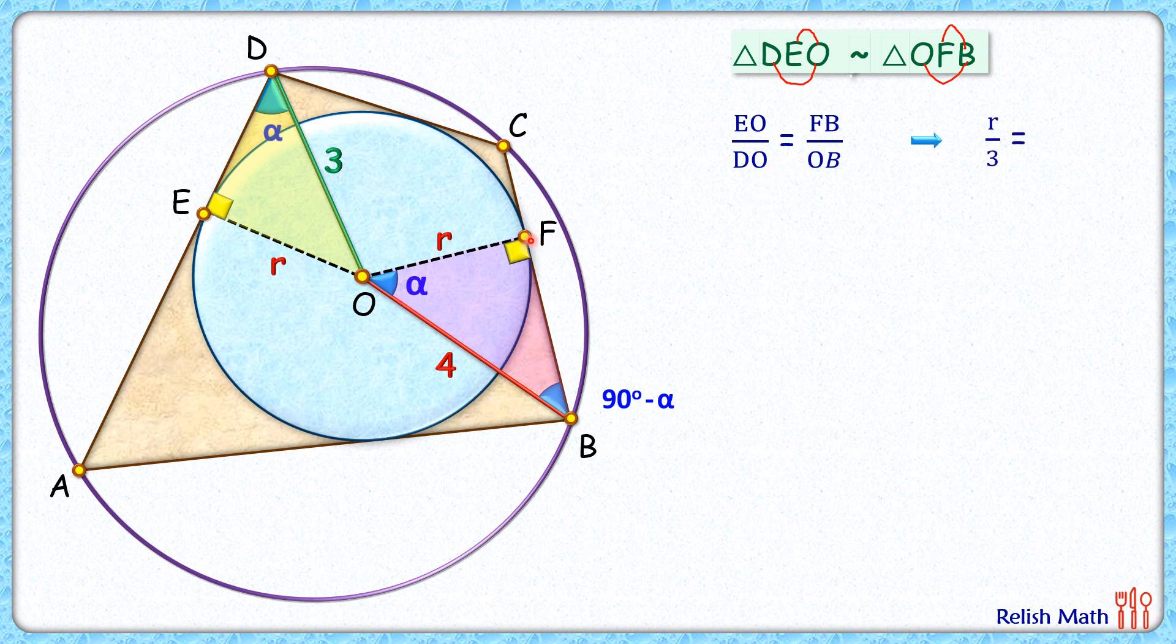Now this pink triangle is a right angle triangle, and FB length will be by Pythagorean theorem the square root of 4 squared minus r squared. So putting FB as square root of 4 squared minus r squared, and OB length is 4.